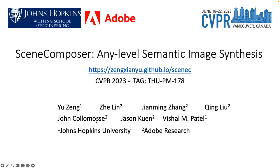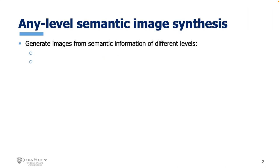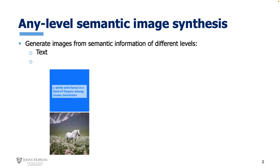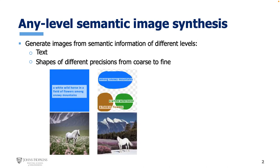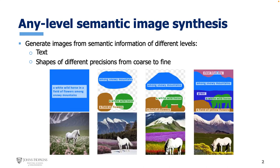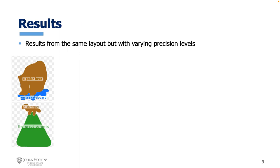Today we present SYNComposer: Any Level Semantic Image Synthesis. In this work, we develop a model that can generate images from semantic information of different levels, ranging from pure text to layout maps containing shapes of different precisions, from coarse blobs to a more detailed object mask. The level of detail is controlled by a variable called precision level. The input becomes equivalent to text when the precision level is set to zero, and becomes a segmentation map when set to the highest value. By changing the precision level, we can control how tightly the generation follows the layout.